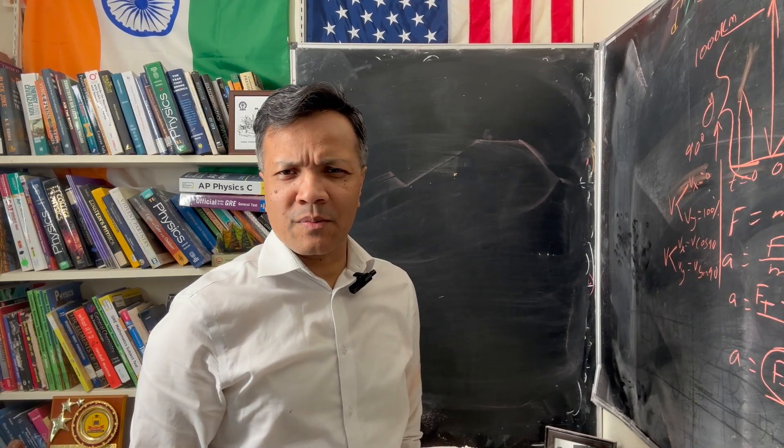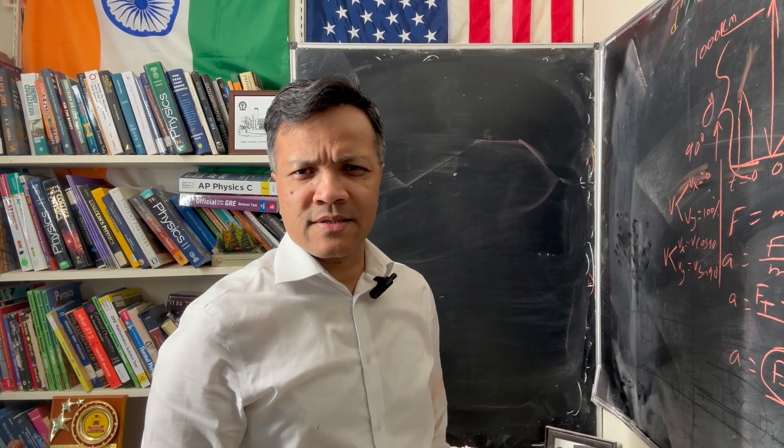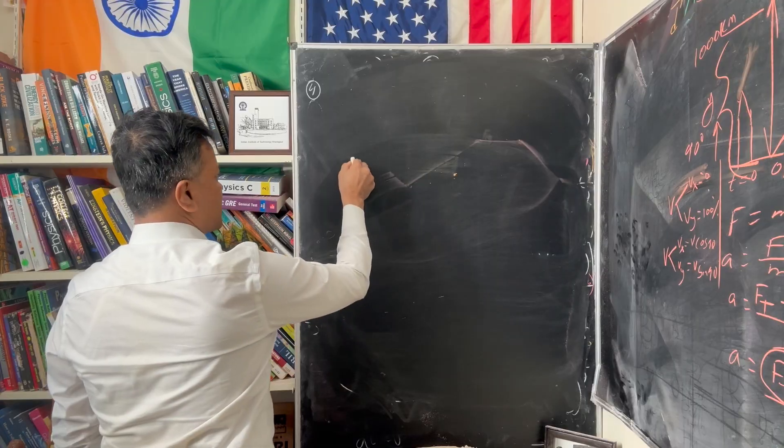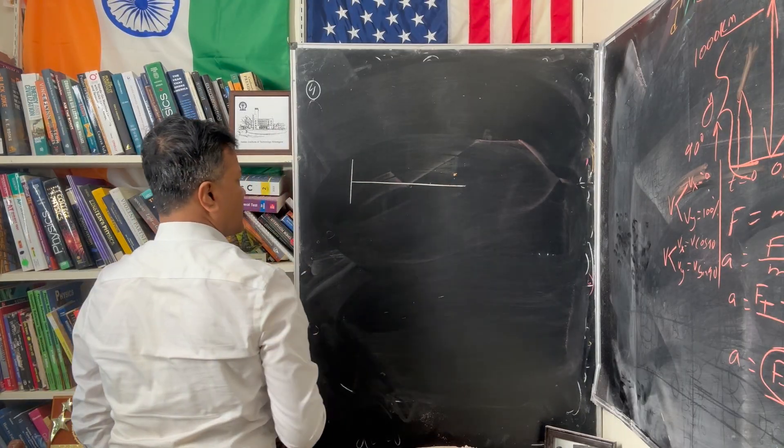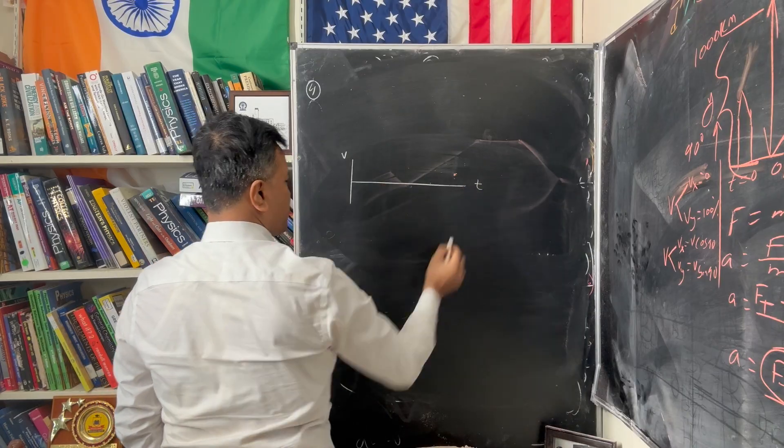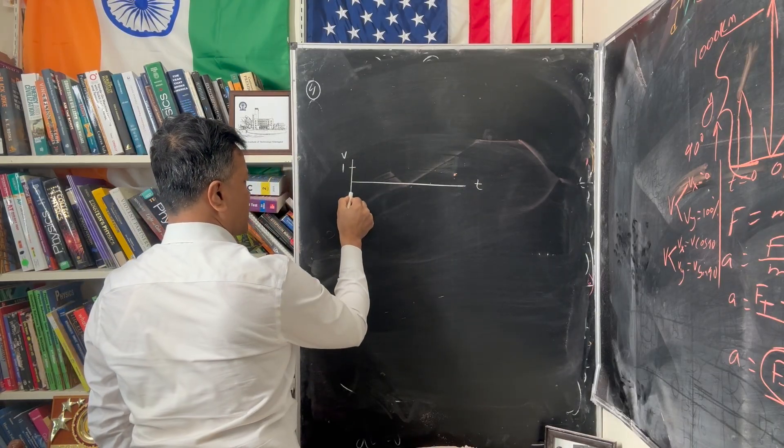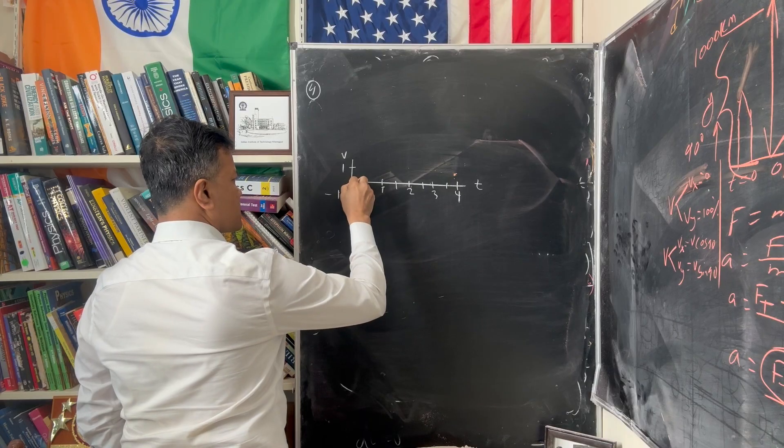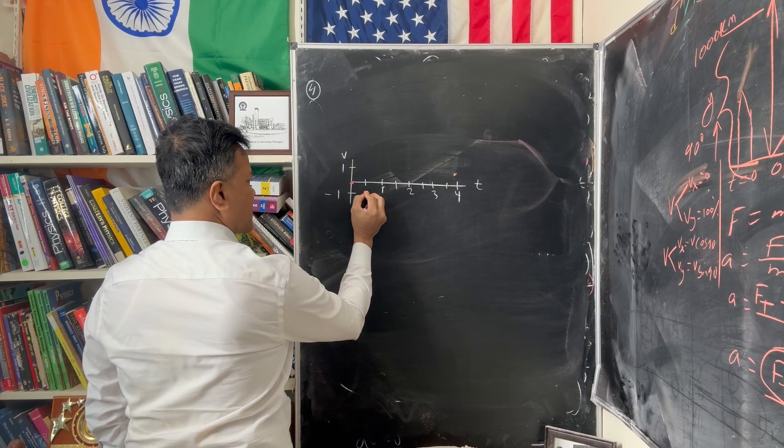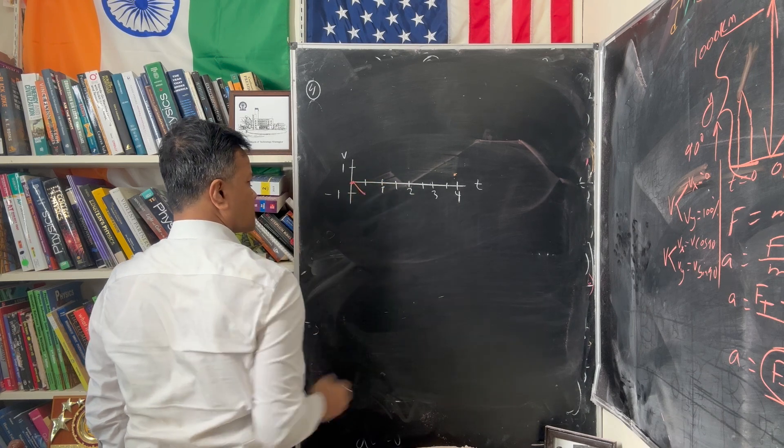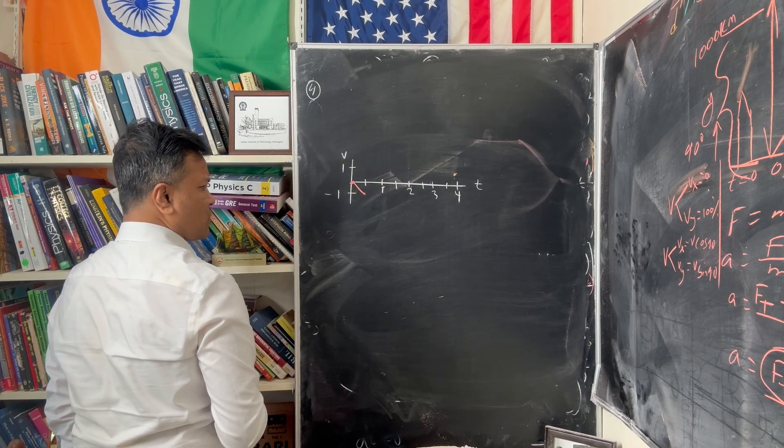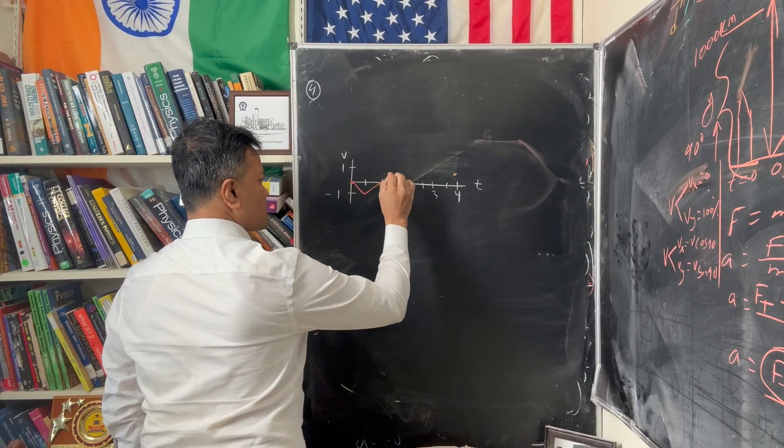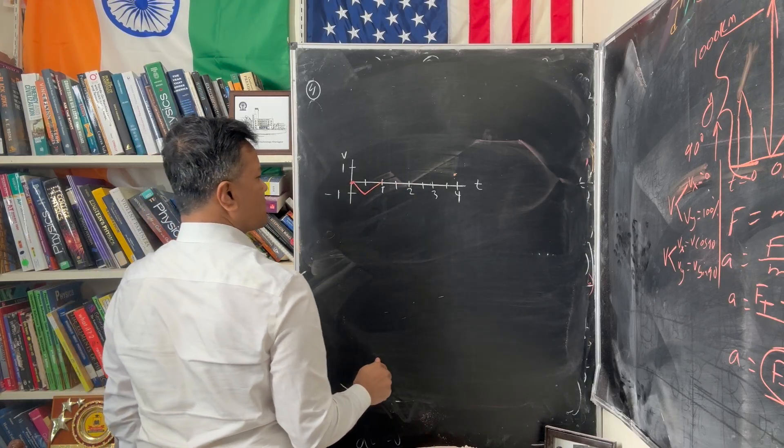So let's go over problem number four from AP Physics 1 exam 3. Problem four is interesting in many ways. I give you a velocity versus time graph between 1 meter per second to negative 1 meter per second, constant acceleration from 0 second to 0.5 second.